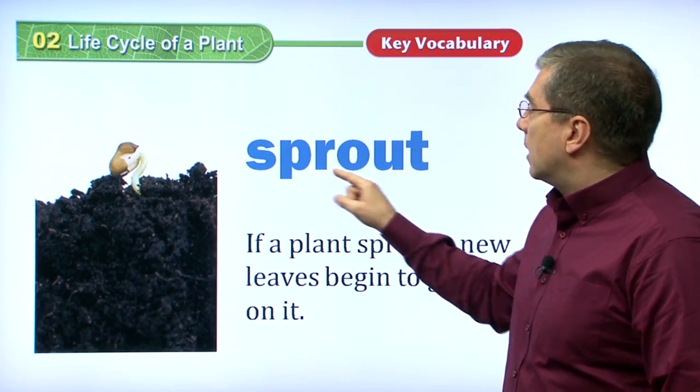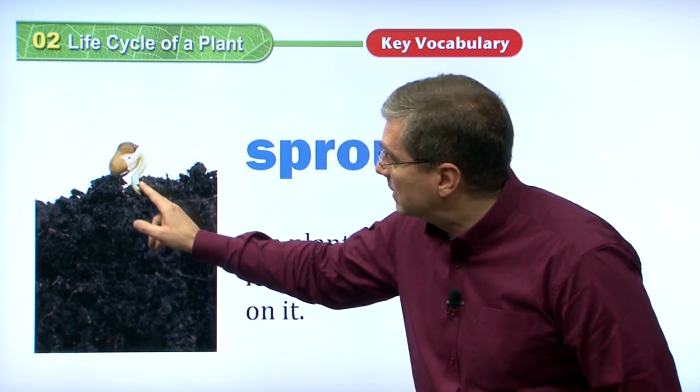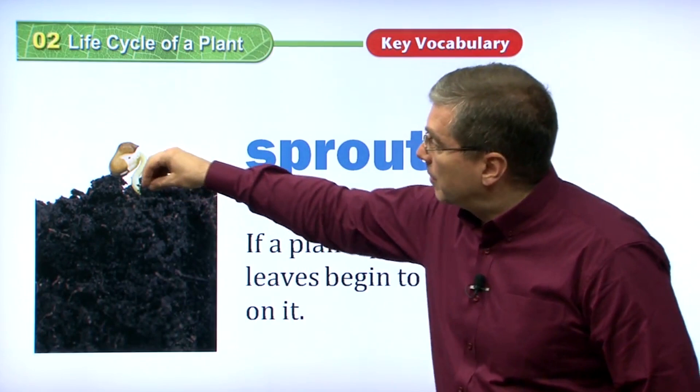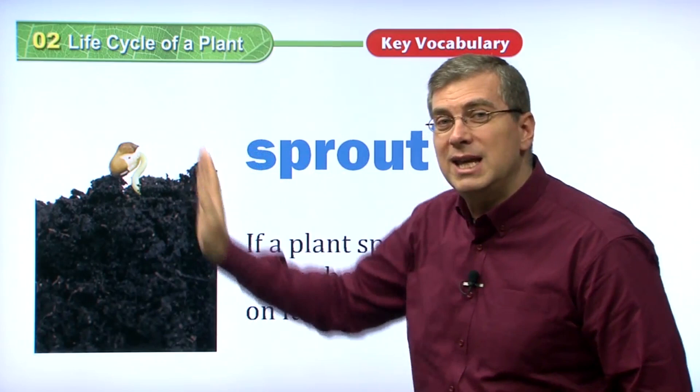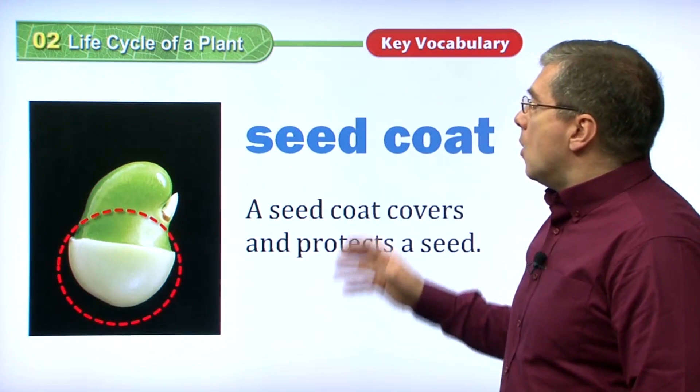The word I used — sprout. We're using this word as a verb. These seeds will sprout up. We can imagine there's a seed under the ground, and this seedling is sprouting up through the dirt. If a plant sprouts, new leaves begin to grow on it. Very quickly, because leaves are a very important part of the plant.